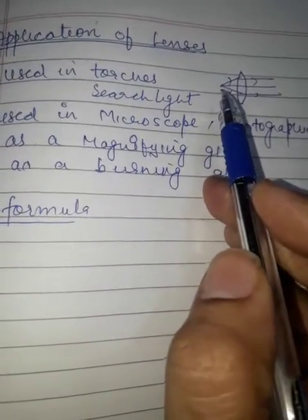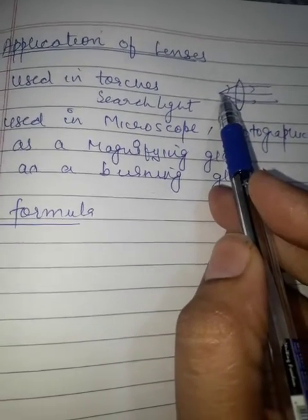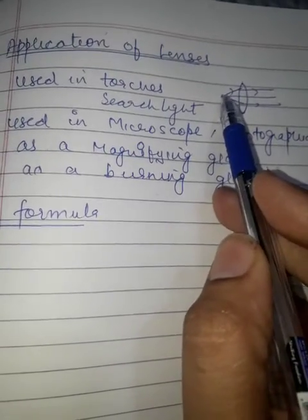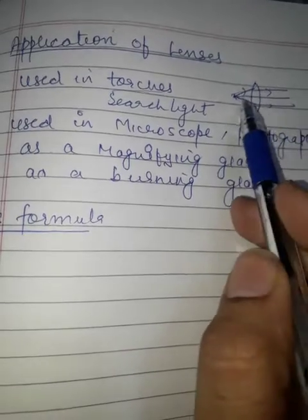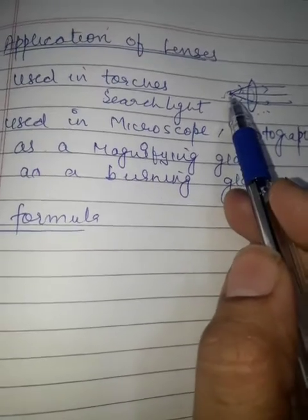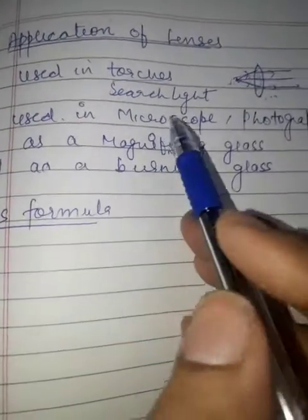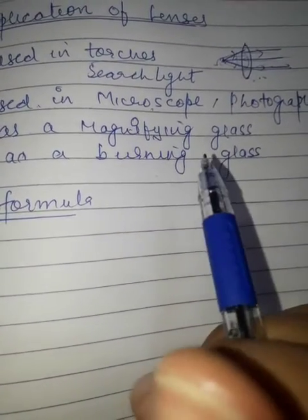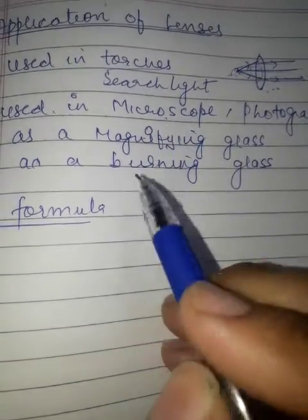Basically what happens in the searchlights: the lens is being placed at the focus. The light can travel a long distance. You have done this diagram — an object is kept at the focus, and the image is being formed at infinity. It is also used in a microscope and as a magnifying glass to read small letters.